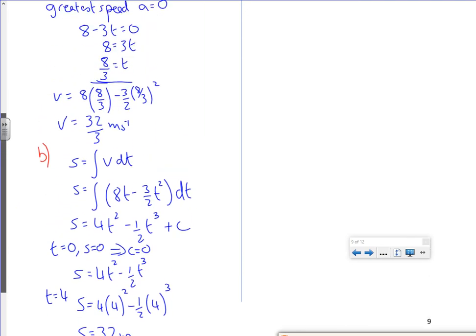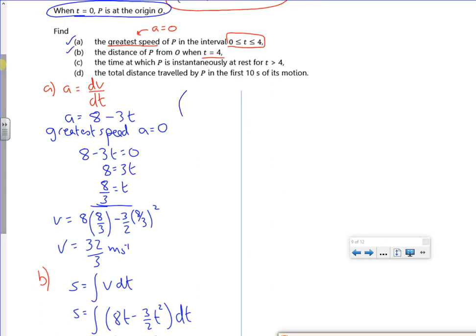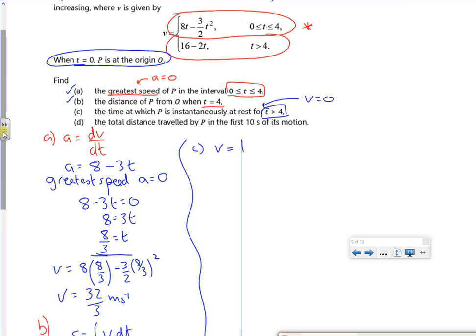Let's have a look at part C. It says a time when P is instantaneously at rest. Instantaneously at rest is when v is zero, and I want it for the second equation. So I know the velocity for the second equation is 16 minus 2t, and I want it at rest. So v is zero. So 16 minus 2t is zero, so 16 is 2t, and 8 is t. So that's the time.